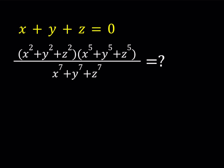Hello everyone. In this video we're going to be simplifying an algebraic expression. We have x plus y plus z equals 0, and we're supposed to simplify this expression where we have the sum of second powers, sum of fifth powers, and sum of seventh powers. We're going to be getting a numerical expression at the end. I'm going to call the three parts expression 1, expression 2, and expression 3, and work on each one separately, then put it together.